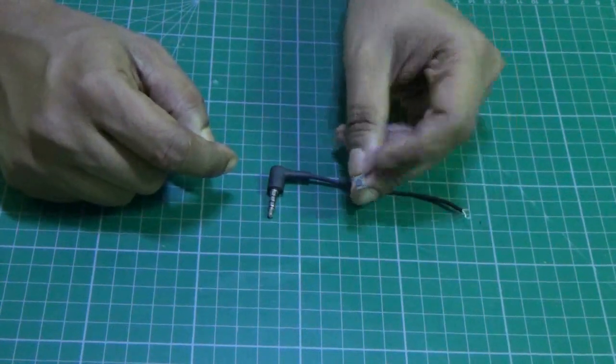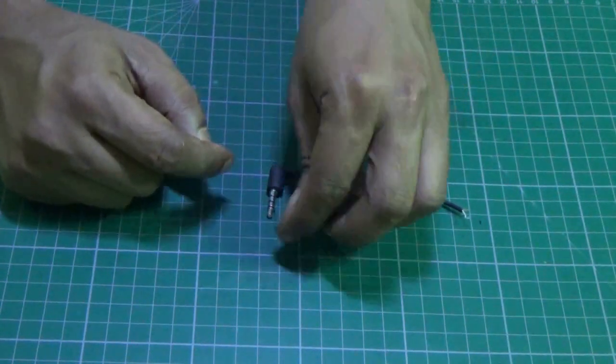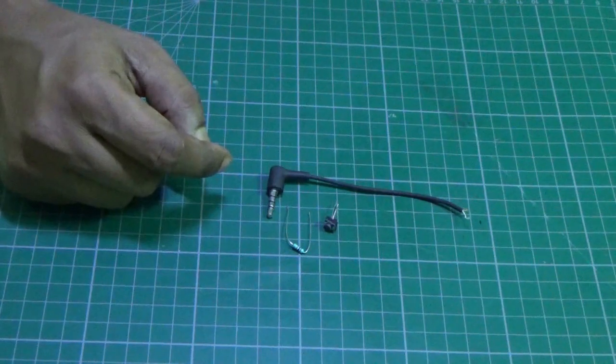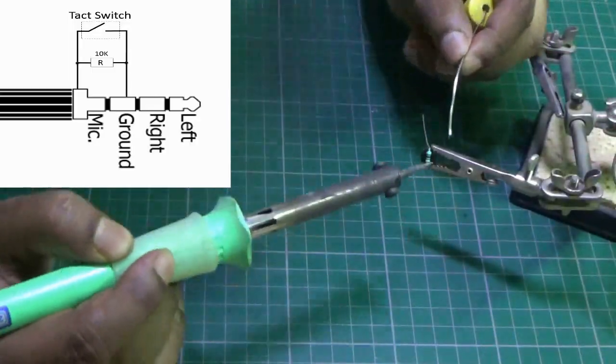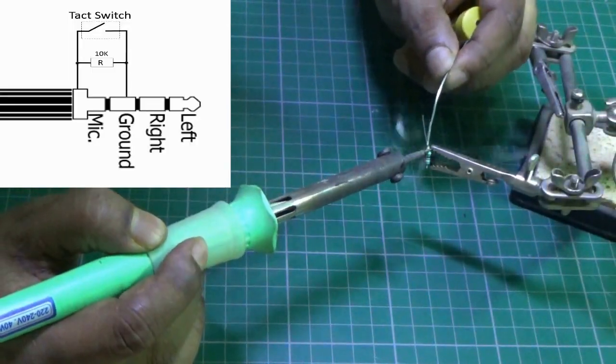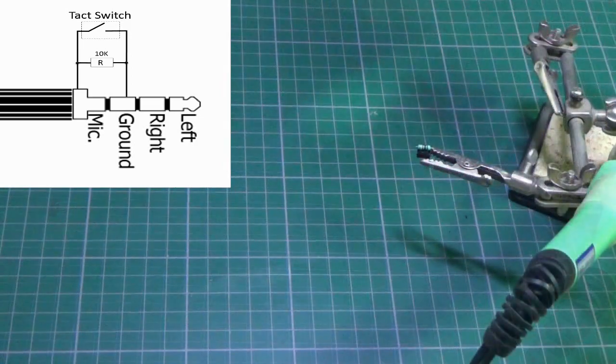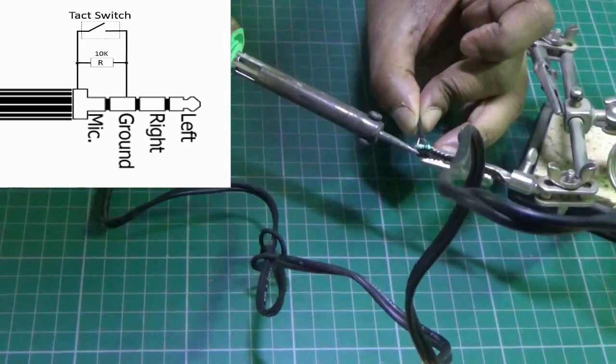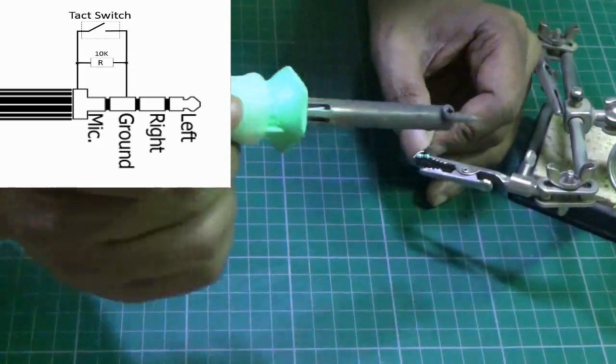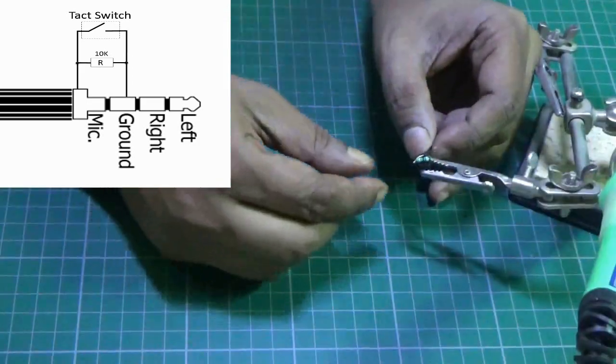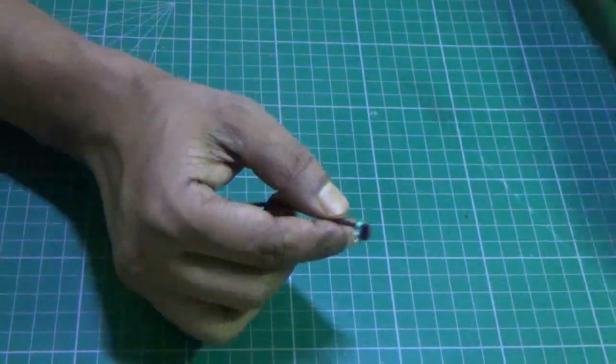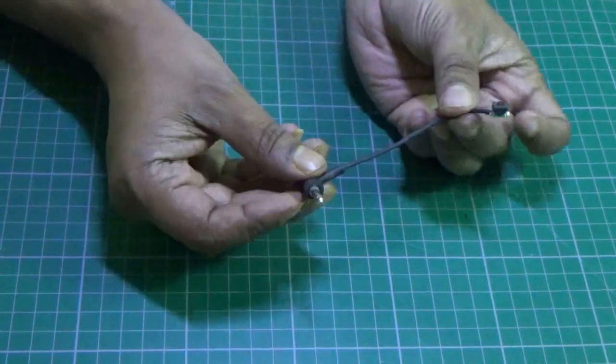Now you need a tack switch and a 10k resistor. Solder the tack switch and the 10k resistor between the mic and the ground pin. Like this.